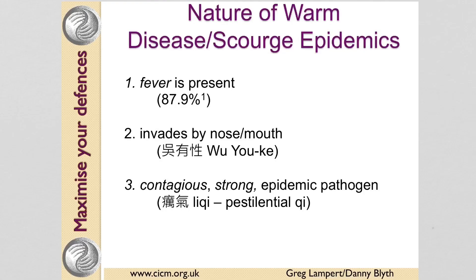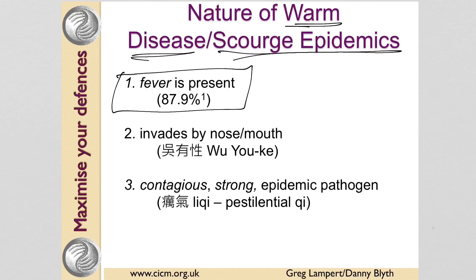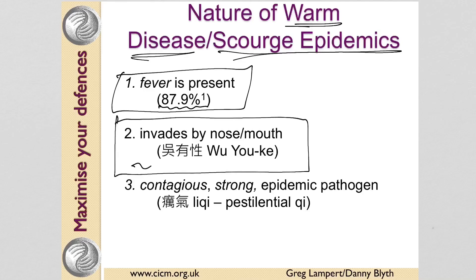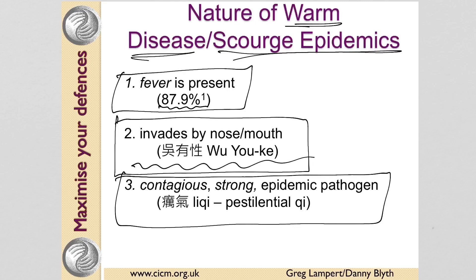In terms of Chinese medicine, this is a warm disease — a Wen Bing, or a scourge epidemic. Why? Because there's a fever present in almost all cases, it invades via the nose and mouth, and it's a strong epidemic and contagious pathogenic factor.